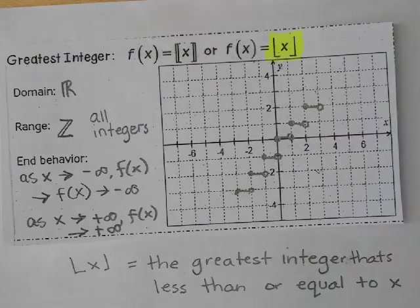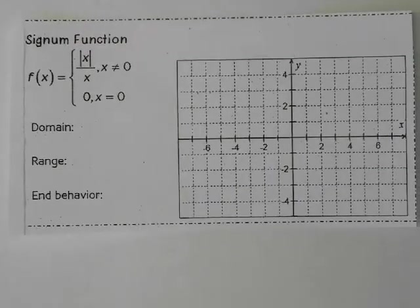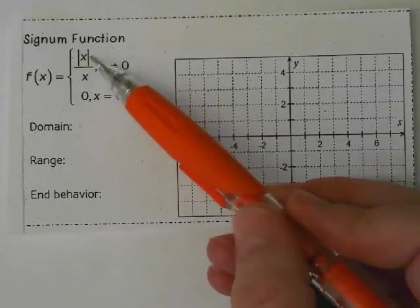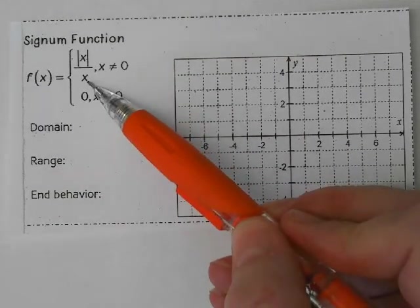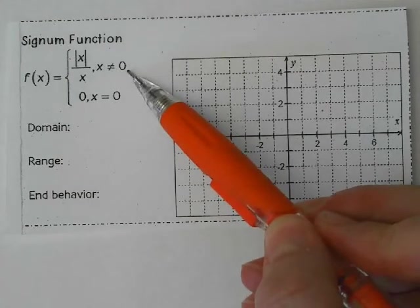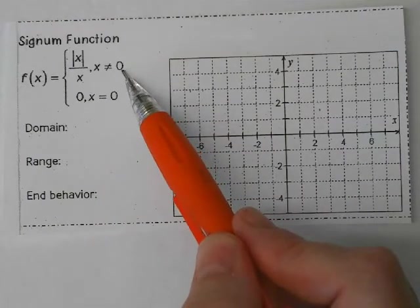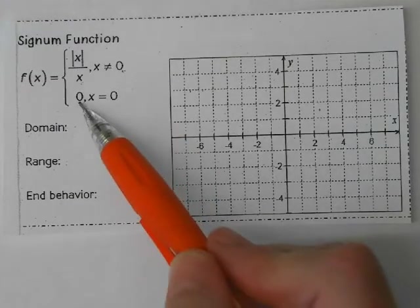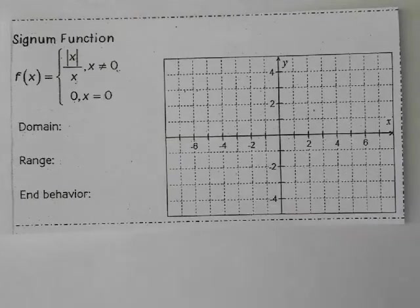And then the last one that we got to do is one that I don't think that you've seen before, called the signum function. This is kind of a weird little function that we want to think about. So it tells us that the function is the Y value is the absolute value of X divided by X, as long as X does not equal zero. Everybody know why X cannot equal zero? Yeah, we can't divide by zero. So they give us another case, and they say it's equal to zero if X equals zero. So let's think about how this thing works.